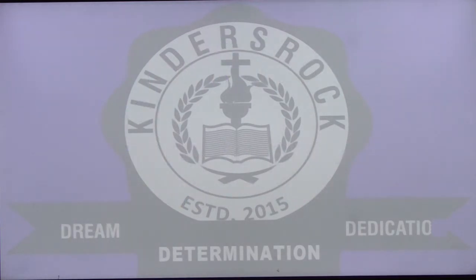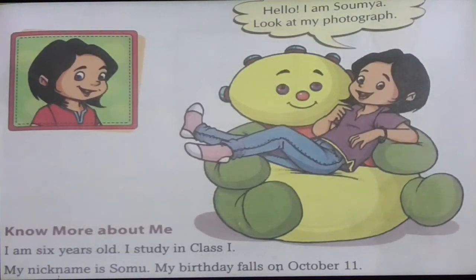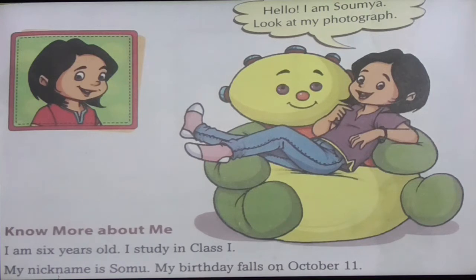In your book on page number five, there is a picture. Look — a girl says 'Hello, I am Somya.' She has put her photograph there. She says: 'I am six years old. I study in class one. My nickname is Somu. My birthday falls on October 11th.' Somya tells us she is six years old and a student of class one. Nickname matlab उसका nickname Somu है।